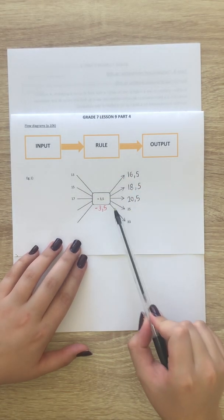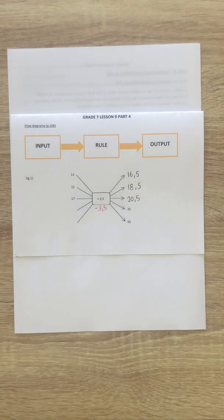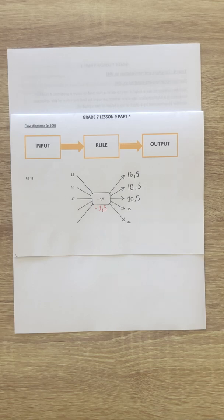Okay, so 25 minus 3.5. You can work it out in your head. That is 20.